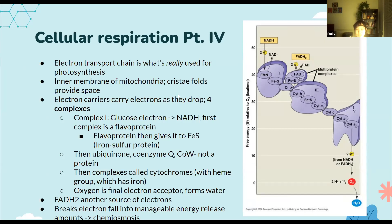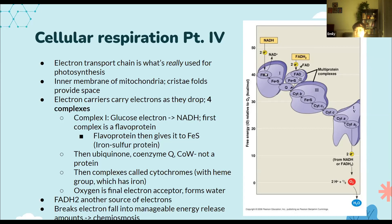The electron transport chain happens in the cristae of the mitochondria — the folds in the membrane, which is why you see the squiggly shape in diagrams. There are four complexes or parts to the electron transport chain. You don't need to memorize these — this is just to give you a visual of how electrons travel and release energy. As you can see in the diagram, you start out on the left with a lot of energy, and by the right there's much less energy, and finally the electron reaches its final acceptor.